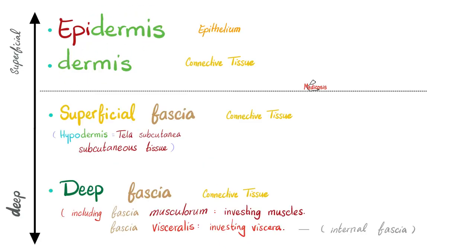Epidermis, then dermis, then superficial fascia — also known as hypodermis — and deep fascia, which can surround muscles, called fascia musculorum, or can invest viscera, called fascia visceralis.